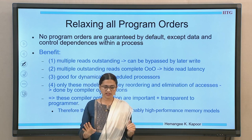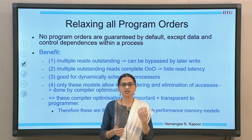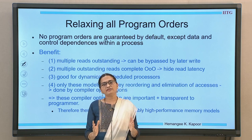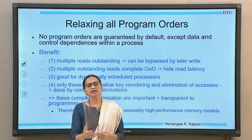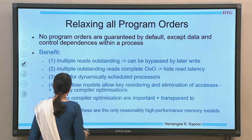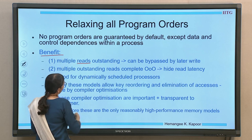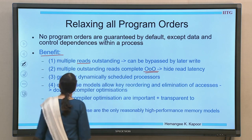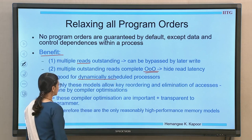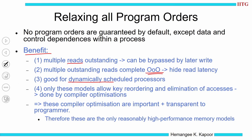The second benefit is I have some writes which miss into the cache and there are subsequent reads and writes. As long as the data dependencies and the control dependencies in the program are maintained, I should be okay to reorder certain instructions. All of this has to happen in a transparent manner because compiler optimizations are important and transparent to the programmer. Still preserving the program semantics, I wish to allow as many reorderings as possible. When I relax all possible orders, I can have multiple reads outstanding, reads completing out of order — very good for dynamically scheduled processors which execute out-of-order, use lot of predictions, and beneficial for all compiler optimizations. For a high performance memory system, I need a model which allows me to relax all the program orders.